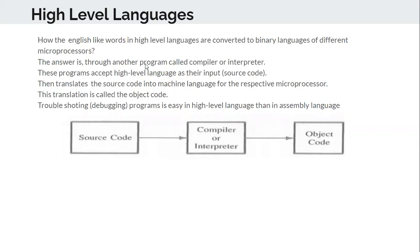The answer is through another program called a compiler or interpreter. Whatever program you enter, whether C, C++, or Python, you enter those codes in an interface. The compiler or interpreter will accept high level language as input — that's what we call source code — then translate the source code into machine language for the respective microprocessor. This translation output is called object code.